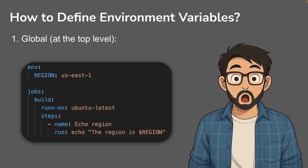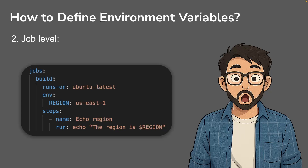Now let's look at the three levels of using environment variables in a workflow. The first is the global level — at the very top of the file. For example, here I have added the region as 'us-east-1' before the jobs section. This environment variable will be accessible in all your steps and all your jobs, so use this when a particular environment variable is needed across multiple jobs.